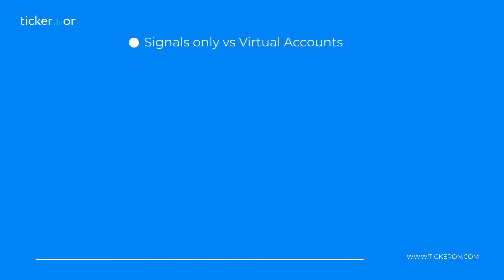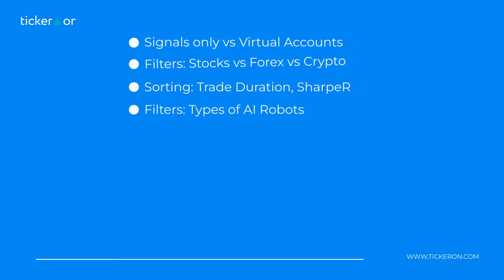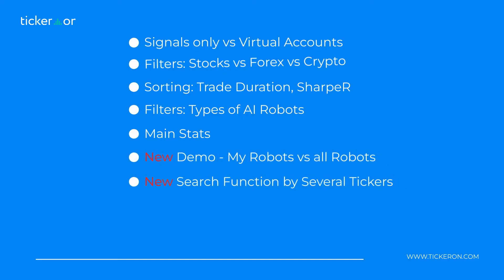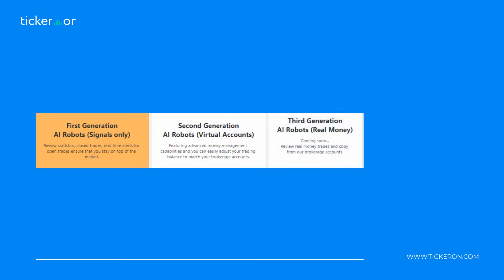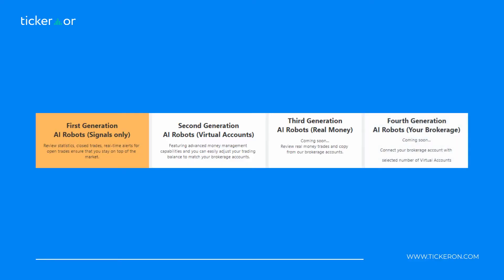Let's distinguish between robots, signals only, and virtual accounts. Signals provide insights without real money management, while virtual accounts incorporate specific trading amounts and money management techniques. Our journey took an unexpected turn during the testing of the third generation — we explored connecting our virtual accounts to brokerage accounts with our own money. Once released, this will allow you to connect your robots to your brokerage accounts. That's a game changer.